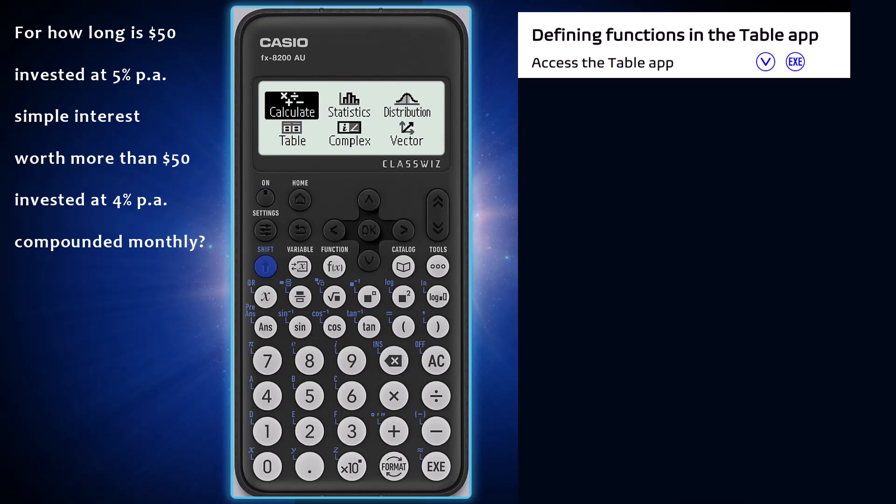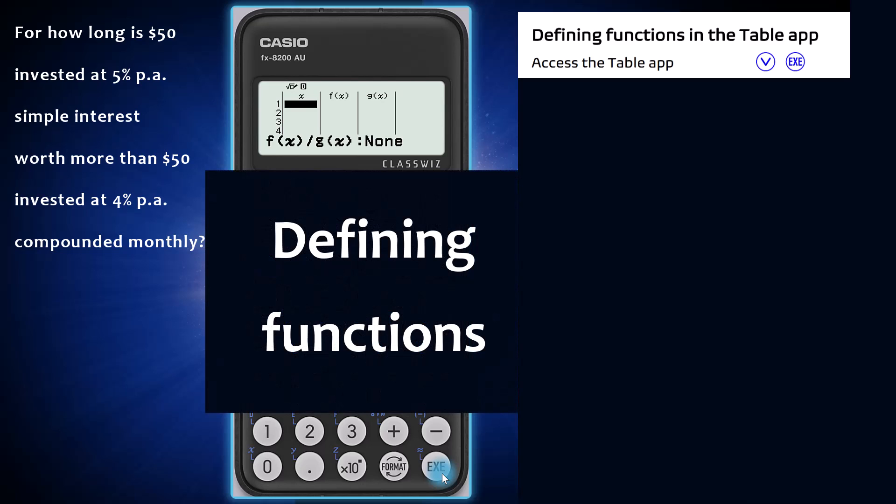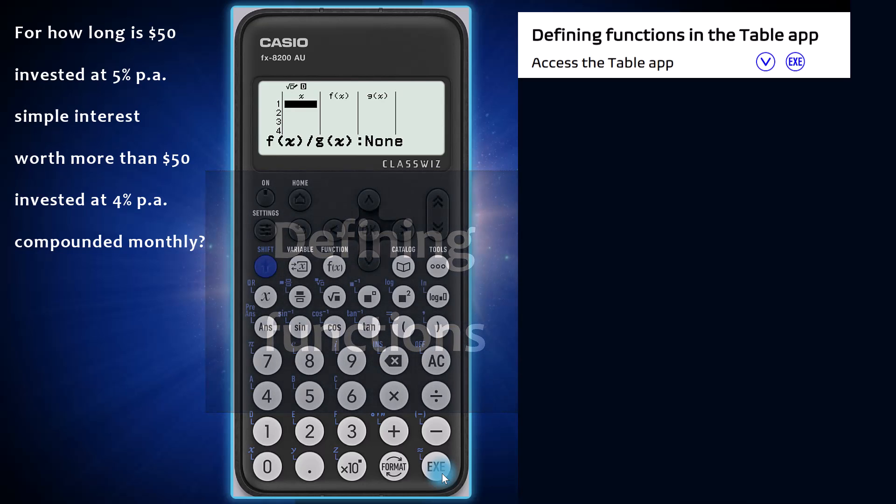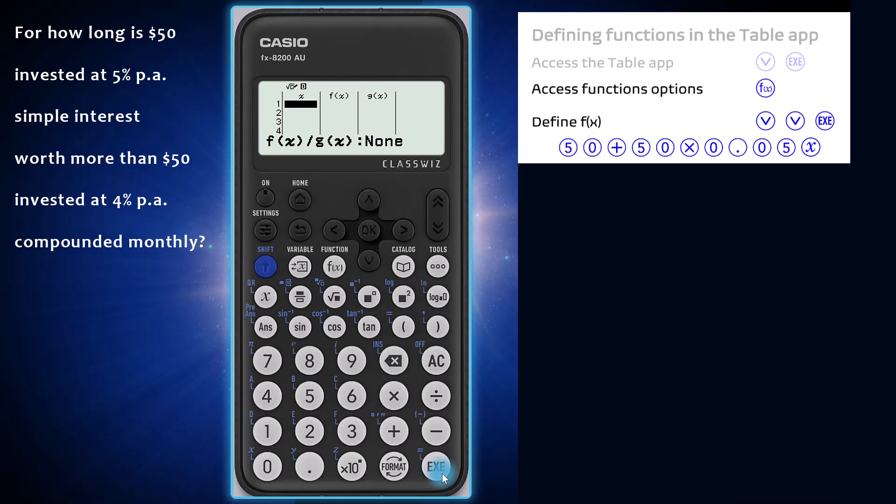Firstly from the home screen, arrow down and choose the table app by pressing execute. Now define the functions. Access function options by pressing the function key, the one that is marked with the f of x.